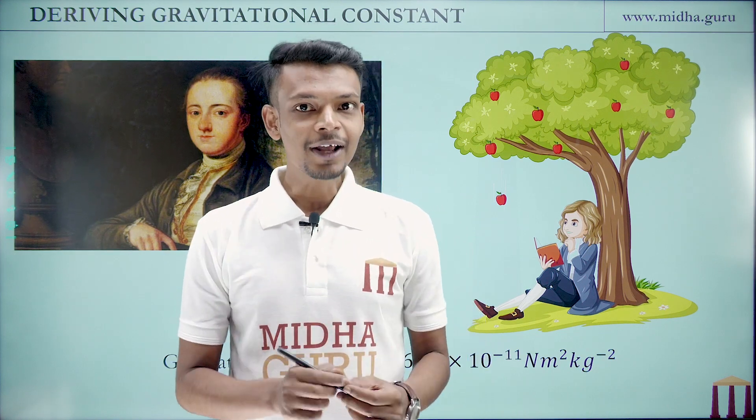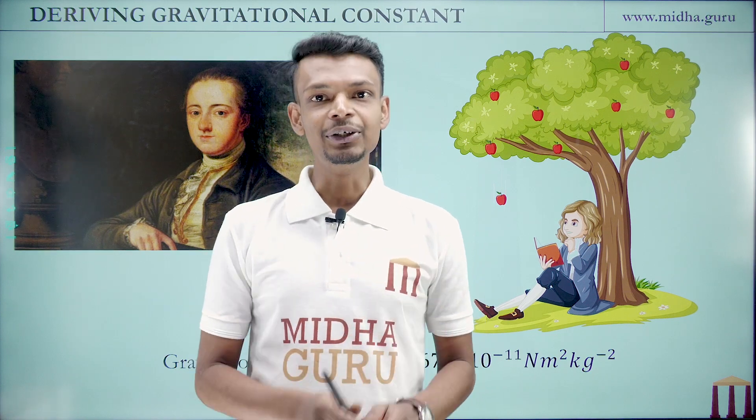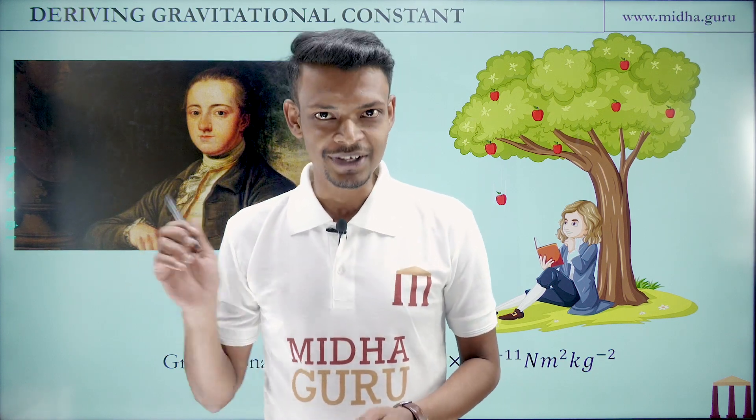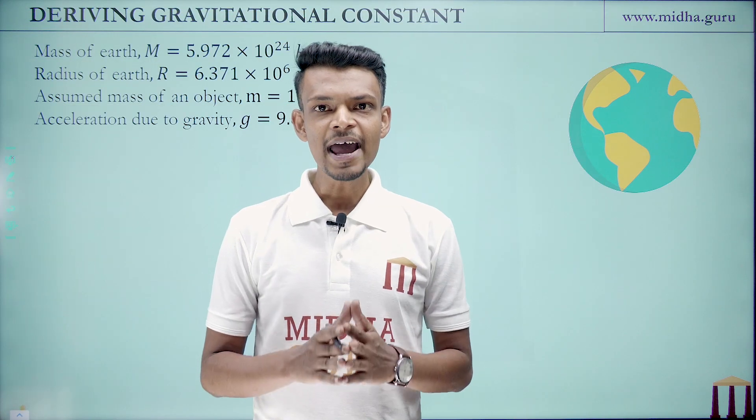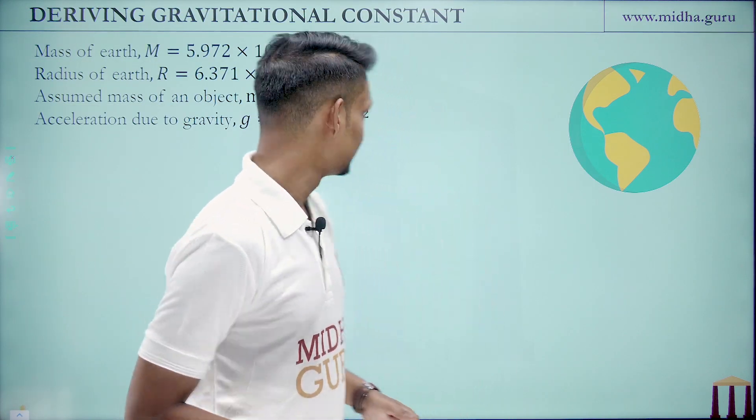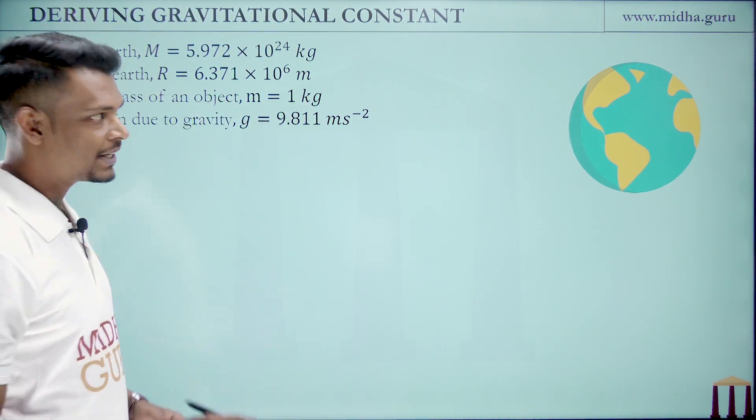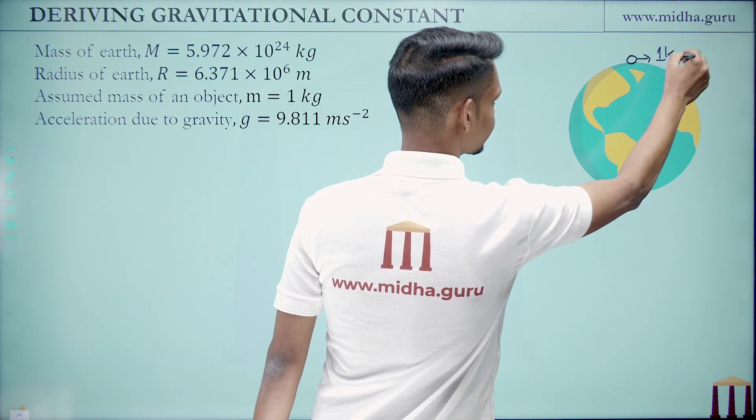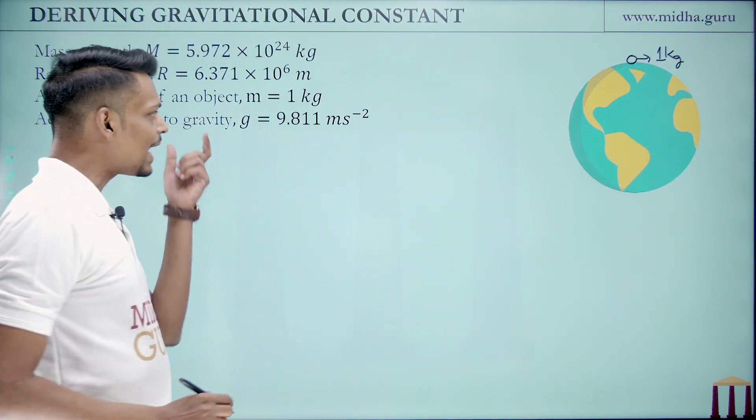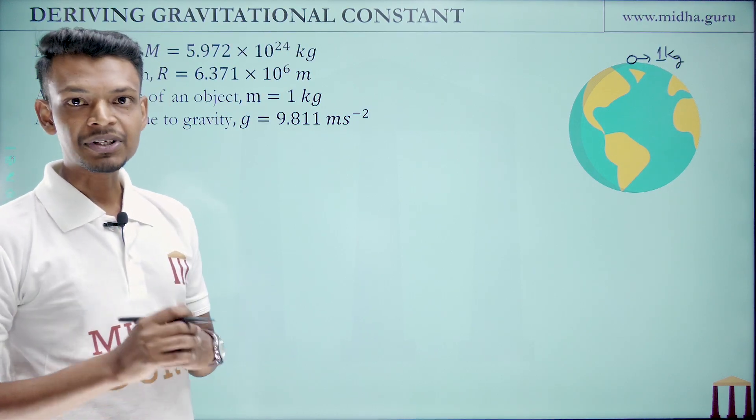Now in this video, we are going to derive the gravitational constant using the method used by Sir Henry Cavendish. So let us start. Now here I have some values pre-written. These are mass of Earth M = 5.972 × 10^24 kg, radius of Earth R = 6.371 × 10^6 m, an object with an assumed mass of 1 kg which is lying on the surface of Earth, and acceleration due to gravity g = 9.811 m/s^2.